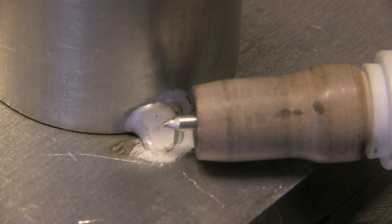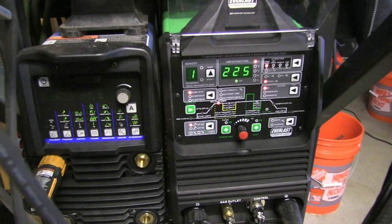I've got two welding machines sitting side by side here. On the left is a Miller Dynasty 280, on the right is an Everlast 255 EXT. The Everlast was sent to me to kind of test out and try out so that's what I'm using today.